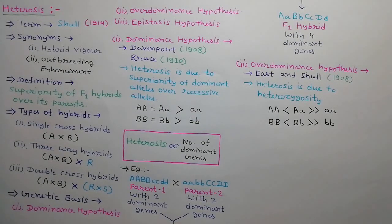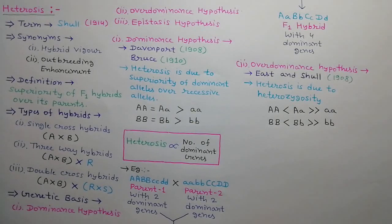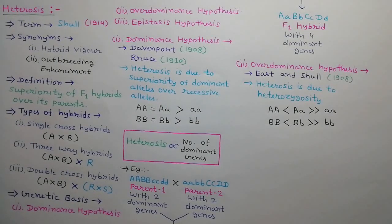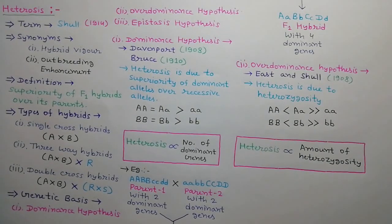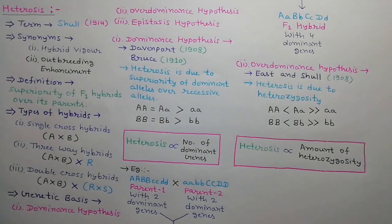For example, Aa is over-dominant over AA and aa. Similarly, Bb is over-dominant over BB and bb. Heterosis is directly proportional to the amount of heterozygosity in the F1 hybrid.